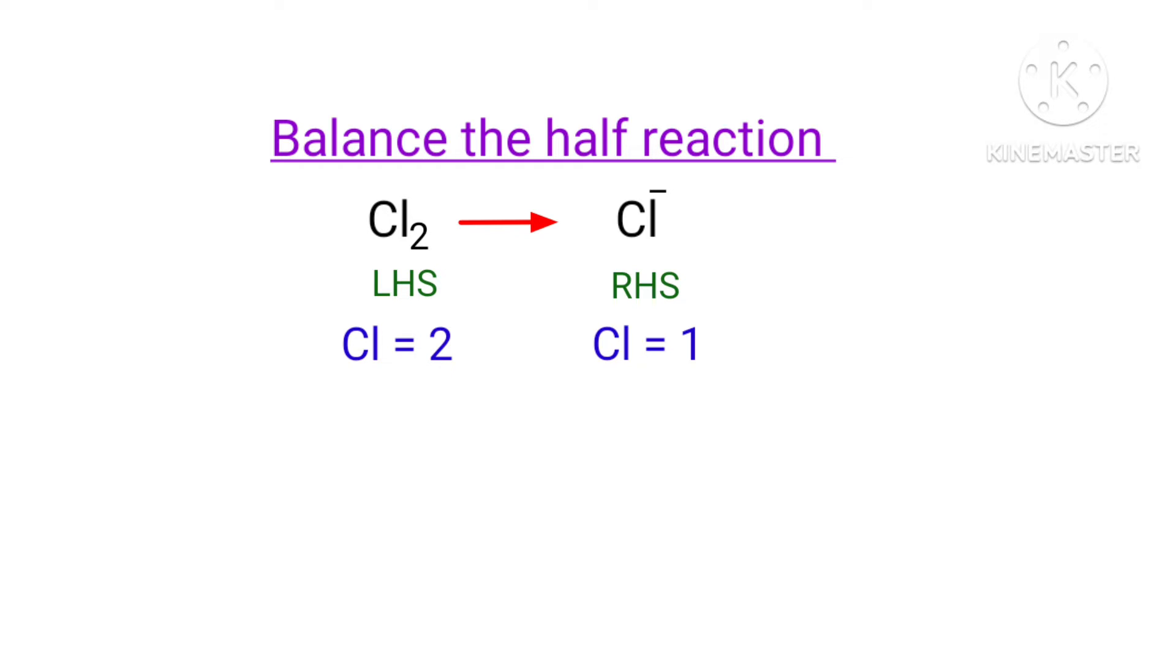So both sides are not equal. To make them equal, we need to put a coefficient of 2 in front of Cl⁻. Now the number of atoms are balanced on both sides.